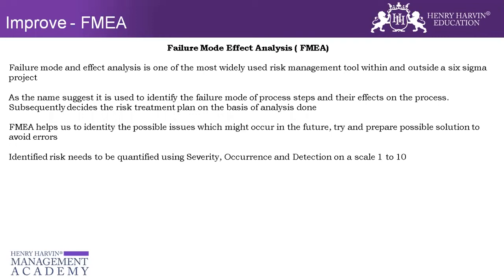Higher occurrence means this failure mode can happen many times. If you give an occurrence of one or two, it means it can happen once in a blue moon. If you give it four or five, it means it does come up occasionally. You have to anticipate here because the error hasn't occurred yet — we are assuming if it happens, how many times it can happen. The third component is detection. If this failure mode happens — in our example the user enters a phone number and the details are not fetched — how easily will I be able to detect that failure mode?